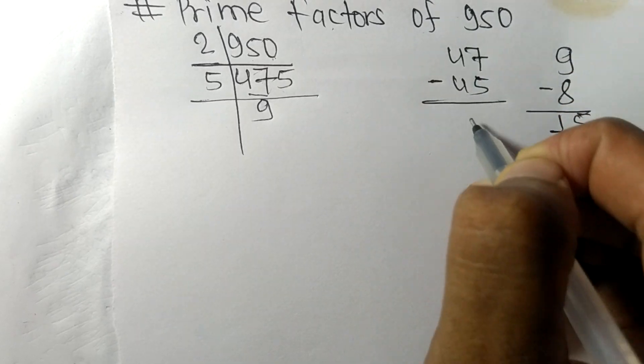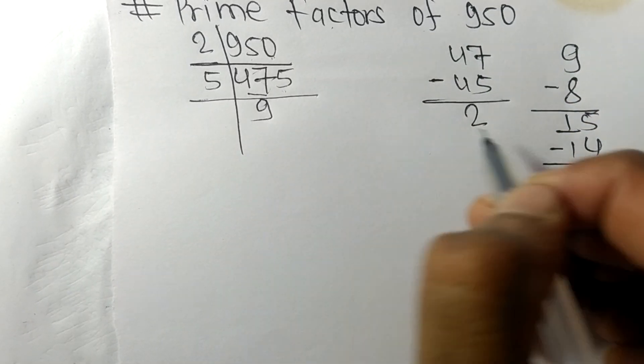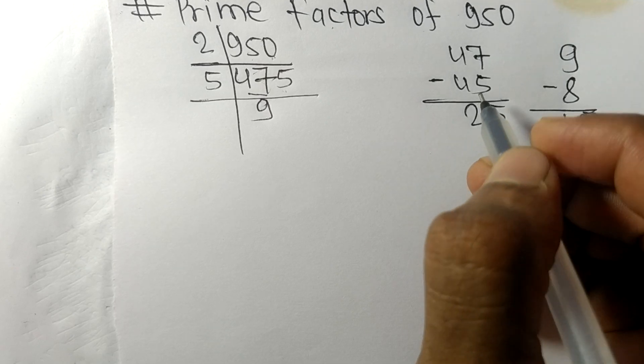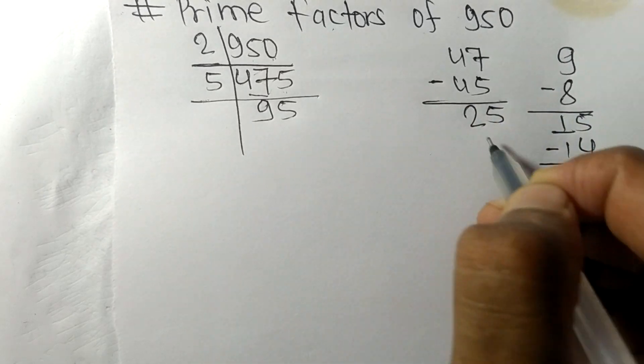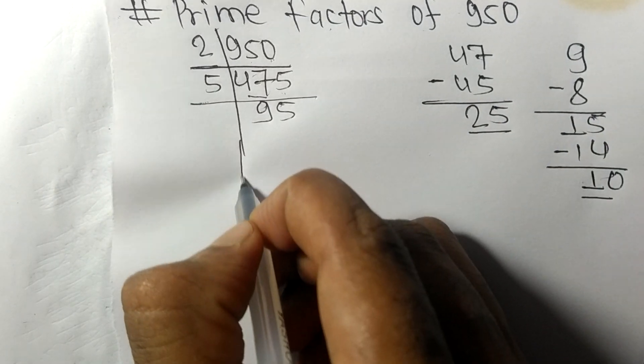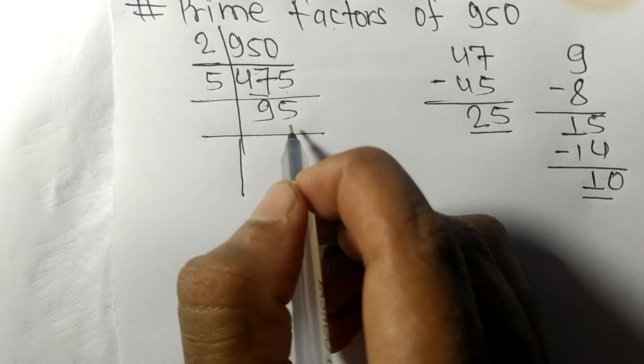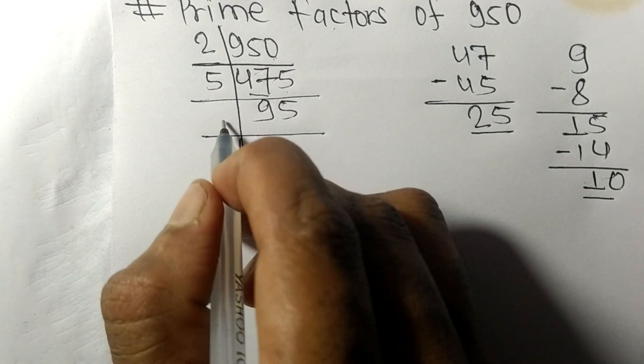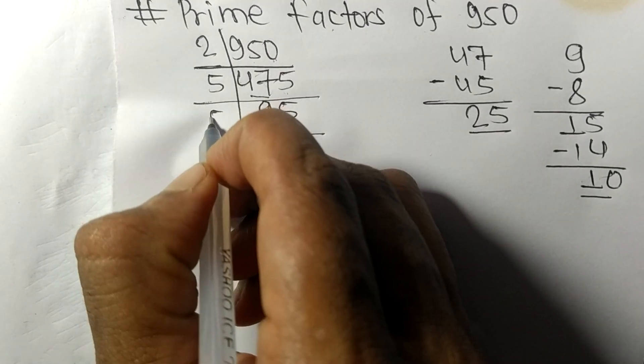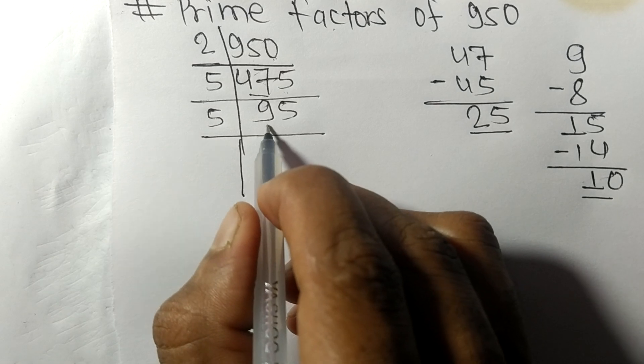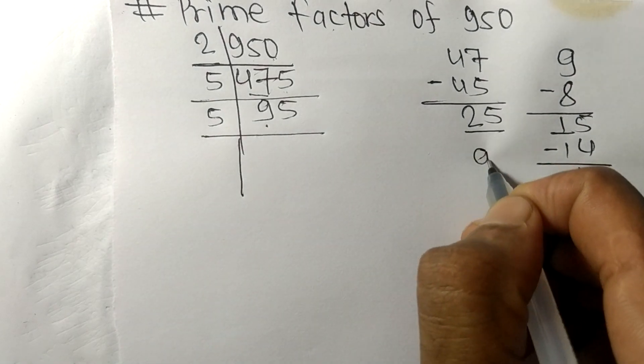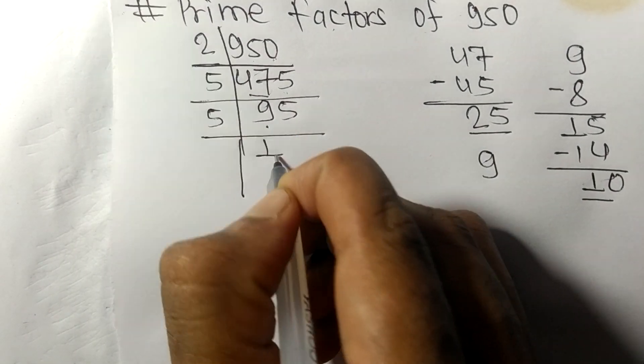And this five, twenty five. Five times five means twenty five. So again we have five at last, so it is exactly divisible by five. So here we have nine. Five times one means five.